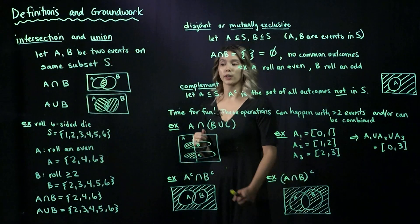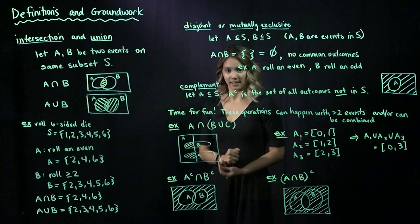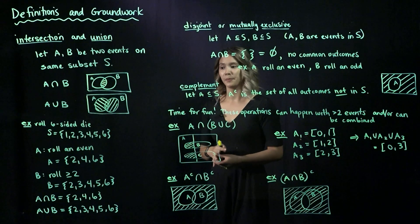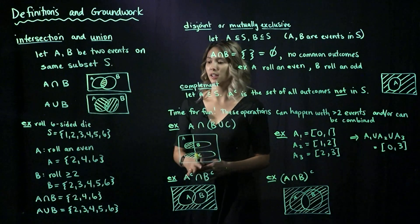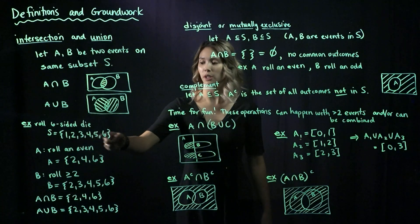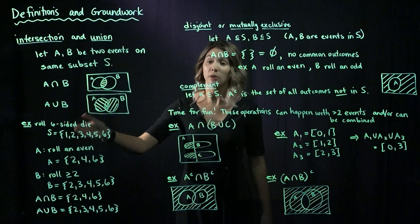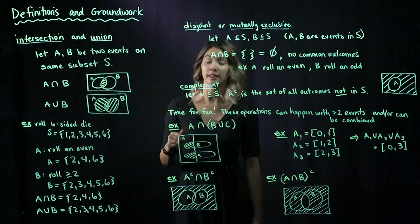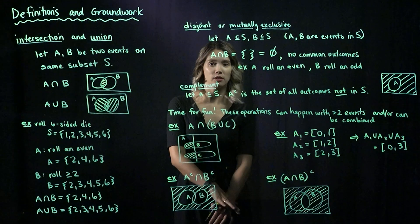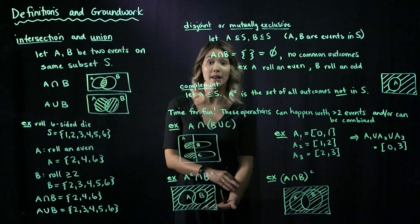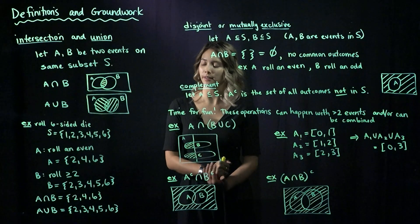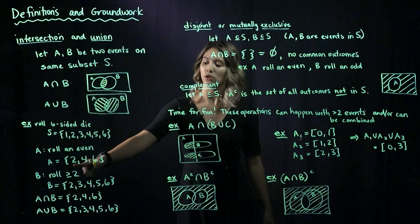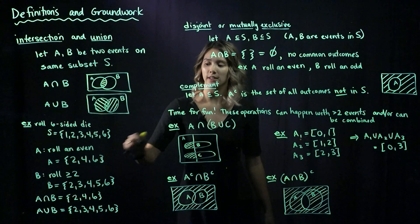Let's look at an example. Let's say we roll a six-sided die. The sample space is {1, 2, 3, 4, 5, 6}, because we could roll any of those values. Now let's define a couple of events. Let A be the event that we roll an even number. So A is the set {2, 4, 6}.